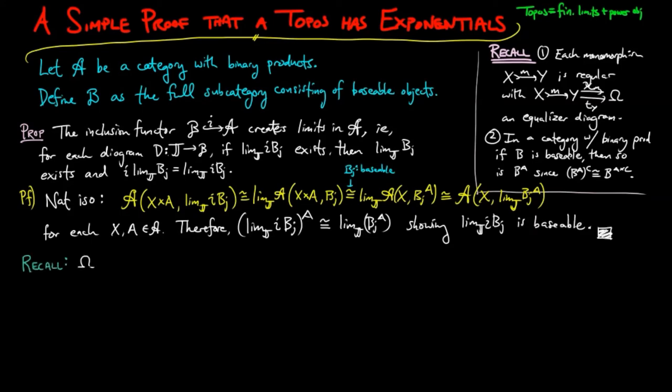Recall that the sub-object classifier, omega, is baseable in a topos, and thus so is the power object on x, Px, for each object x, by 2 above.